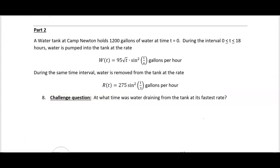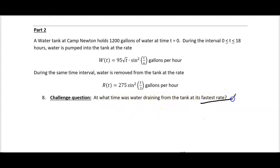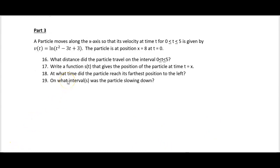There is a challenge question about when water was draining at its fastest rate — this sounds like another candidates test max/min problem. That concludes part two. Part three: a particle moves along the x-axis with velocity given by a function from t equals zero to five, and the particle's position is eight at t equals zero.